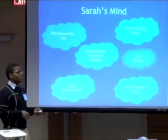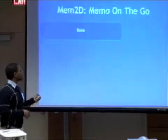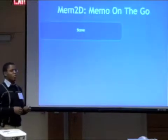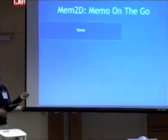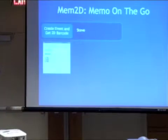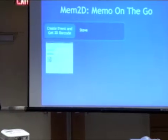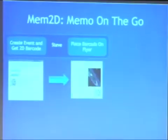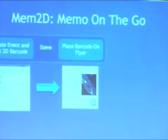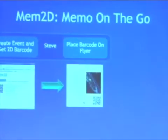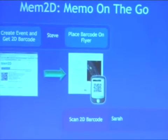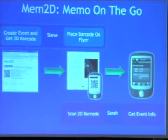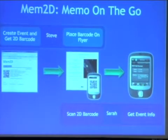So let's see what we can do about that. Enter Mem2D — it's a memo on the go. With Mem2D, Steve simply goes to the Mem2D website and gets a two-dimensional barcode. He places that barcode onto his event flyer. Then, when Sarah passes by the flyer, she scans it with her phone, and she instantly gets the event information right there on her phone. Mem2D does all the work for her.